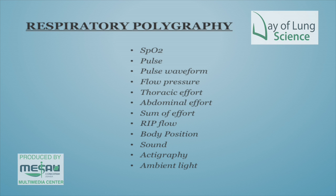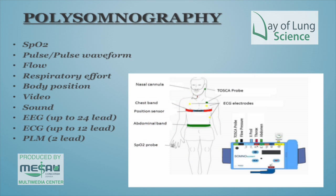When we get to polysomnography, we have up to 24 EEG leads, up to 12 ECG leads, and two PLM leads. You can also record video and sound, because some people have parasomnias — unusual behaviours during sleep — so it's often very interesting to record these.